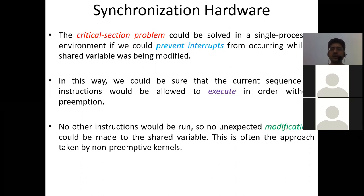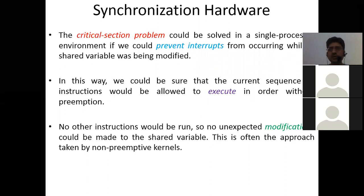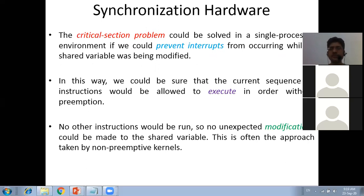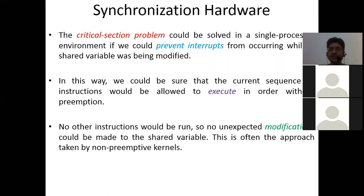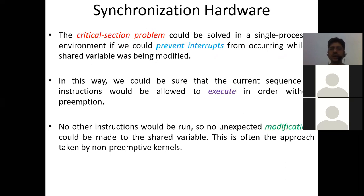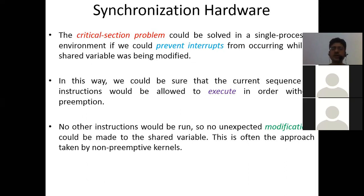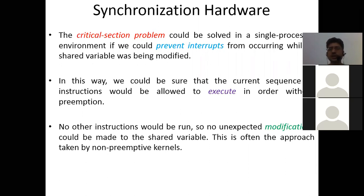This is often the approach taken by non-preemptive kernels. A non-preemptive kernel will ignore any other request that comes in while one process is executing. Think of it like 'away from sight, away from mind' — if the operating system has blocked a process and its interrupt, then the process executing in its critical section will have no interference and will execute peacefully. In this way, the issue with the shared variable is bypassed.